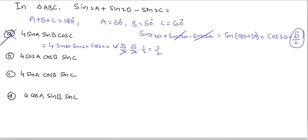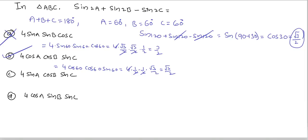The second option is 4cosA cosB sinC = 4 × cos60 × cos60 × sin60 = 4 × (1/2) × (1/2) × (√3/2). The 4 cancels with the denominators, giving √3/2. This is equal to √3/2, so the second option is correct.